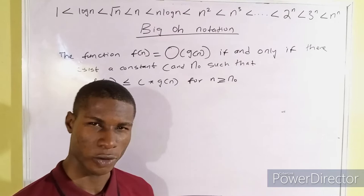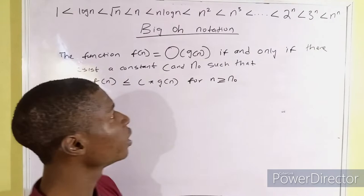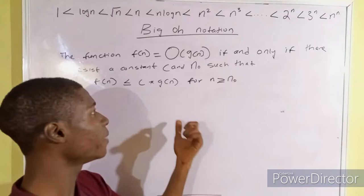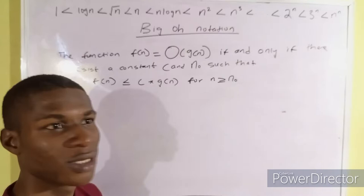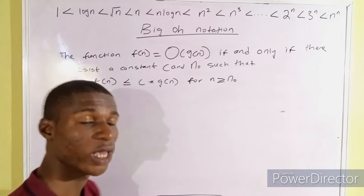So let's start from the Big O notation. What is the definition of Big O? The function f(n) equals Big O of g(n) if and only if there exists a constant c and n-naught such that f(n) is less than or equal to c multiplied by g(n) for n greater than or equal to n-naught. I understand that is a full statement and might look a bit confusing.